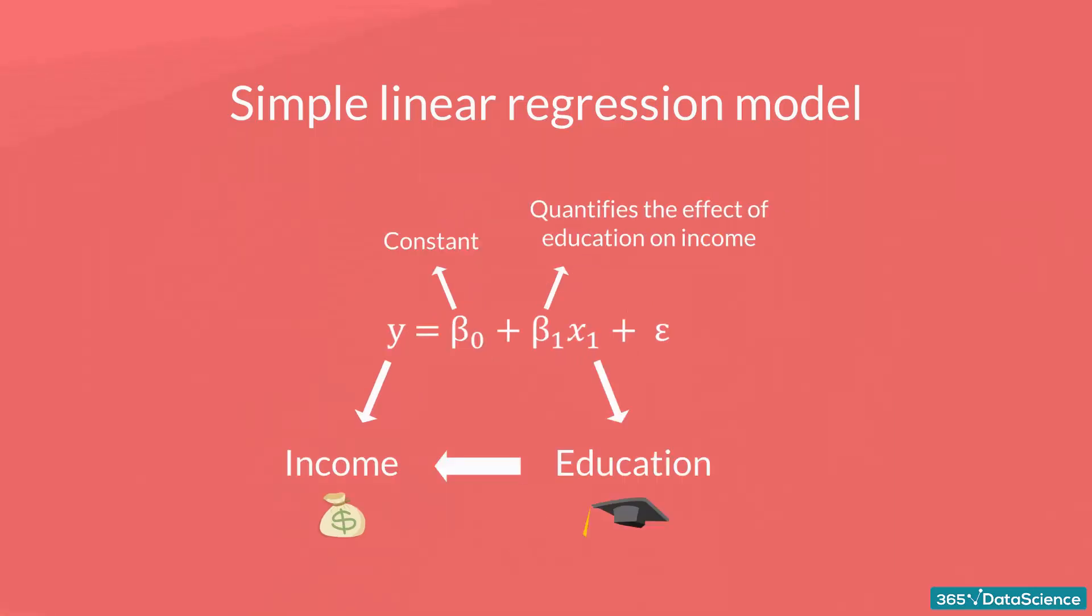The last term is epsilon. This represents the error of estimation. The error is the actual difference between the observed income and the income the regression predicted.